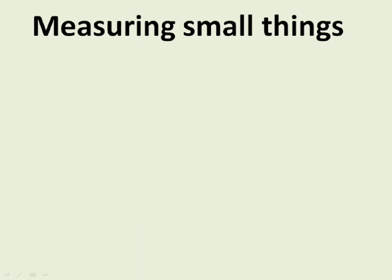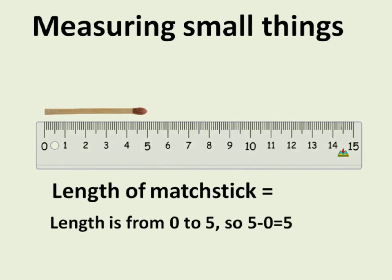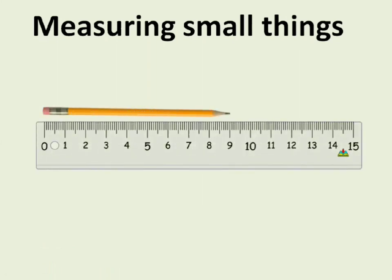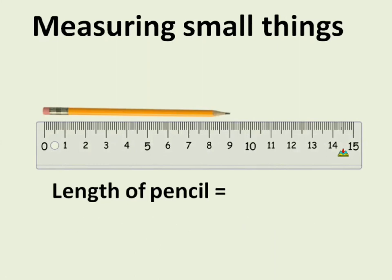The first example: let's measure the length of a math stick. The length is from zero to five, so five minus zero is equal to five. Hence it is five centimeter. Do note the start point is zero. Now let's measure the length of a pencil. The length is from zero to nine, so nine minus zero is equal to nine. Hence it is nine centimeter. Here also the start point is zero.